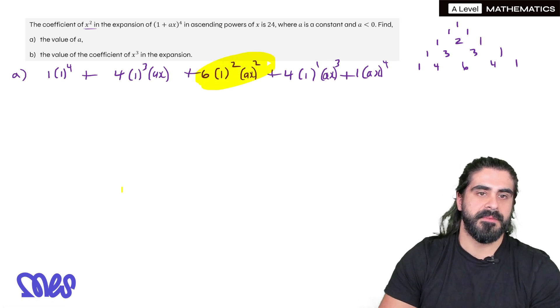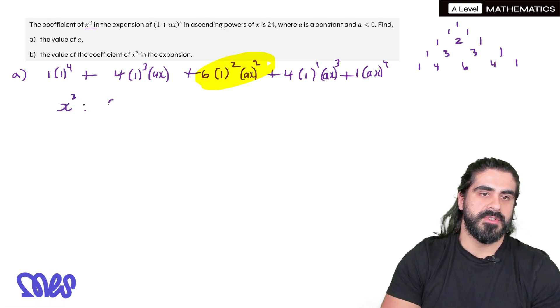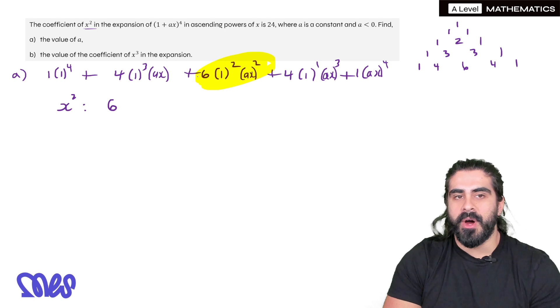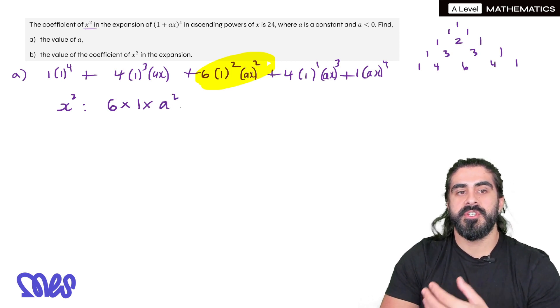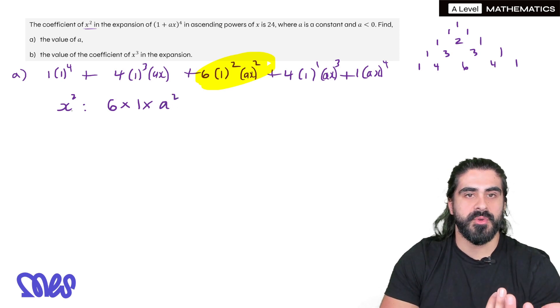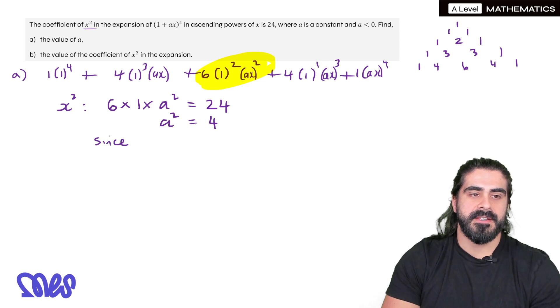So it's 6, so if I focus on the x² it goes 6 times 1 times a²x². So when you square ax it becomes a²x². But you don't need to write x² because we're only talking about the coefficient of x². So this is the coefficient, they're saying that equals 24 in the question. Divide by 6, 24 divided by 6 is 4. Now since a is less than 0 as they stated in the question, a is -2. And that is our solution.